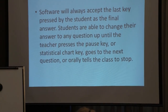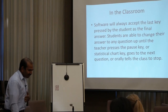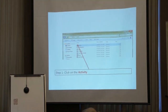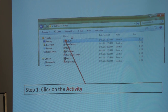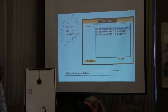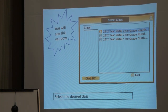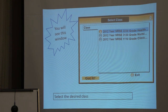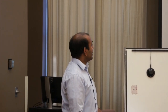Up until the teacher presses the pause key, statistical chart key, or goes to the next question — or orally says stop — the students will be able to change their answer. Now let us go to the desktop. On the desktop you will be able to see a folder called GotItIn. Then just click on the activity. When you click on that activity you will be able to see a window where you can select the course you are teaching — for example, nursing health science or clinical judgment.